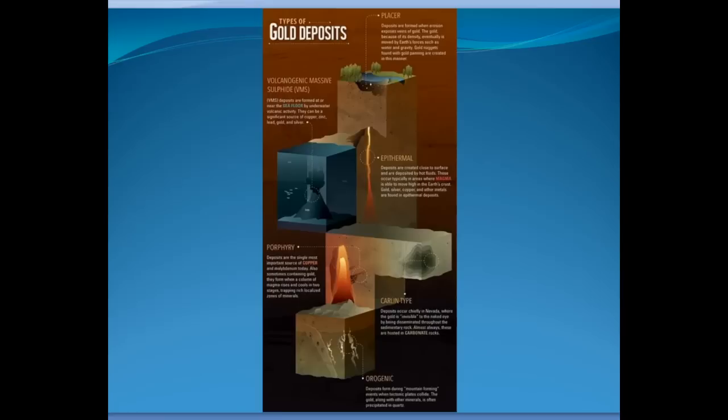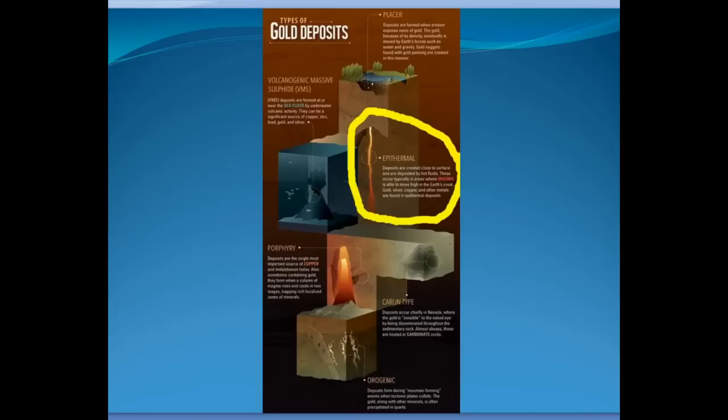We may do a geology series on each of those individually in the future, but today I want to look at the epithermal type. Epithermal is the type that forms closest to the surface of any of these deposit types. In fact, epithermals can form from within 100 feet of the surface down to perhaps half a mile or more.